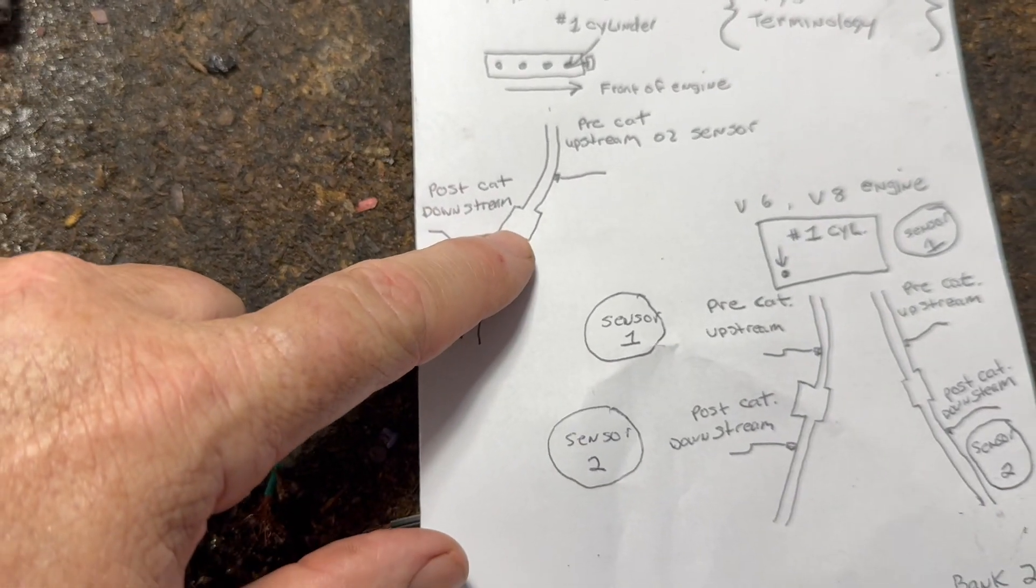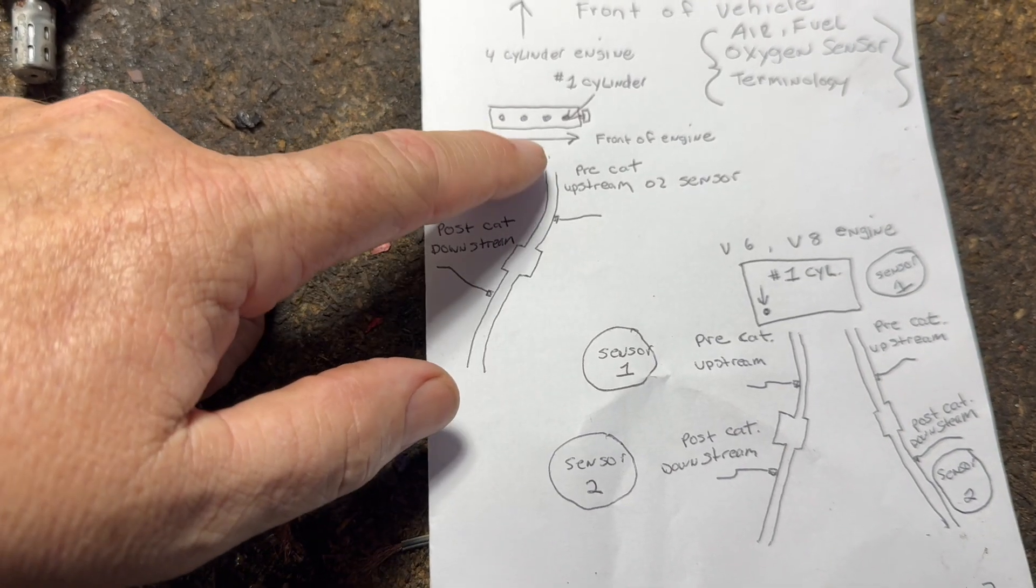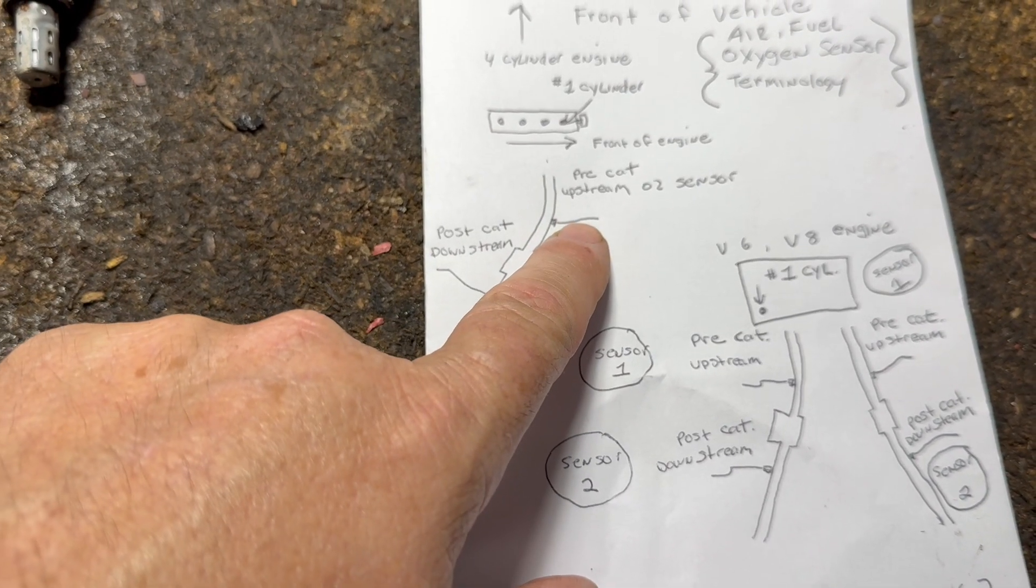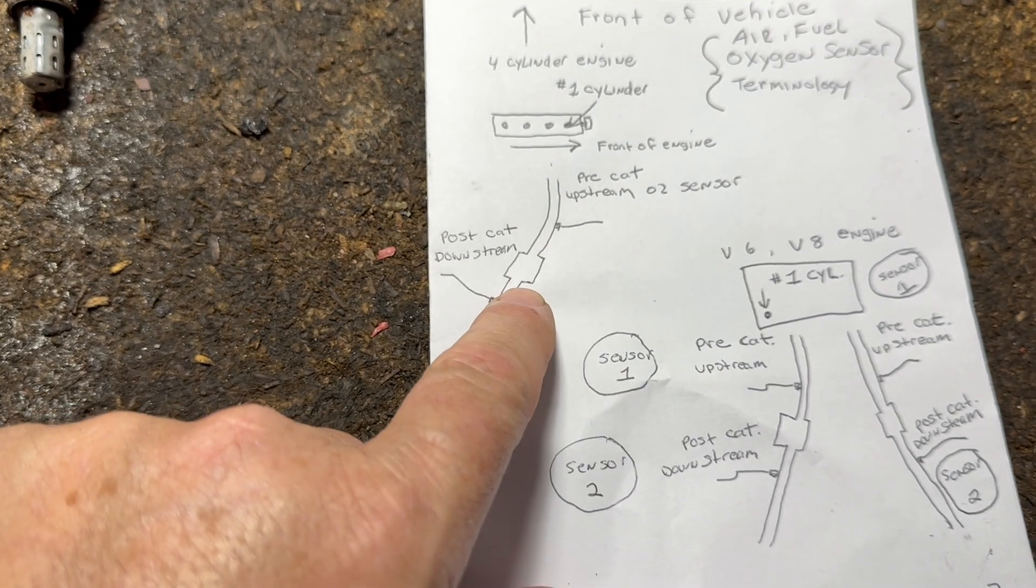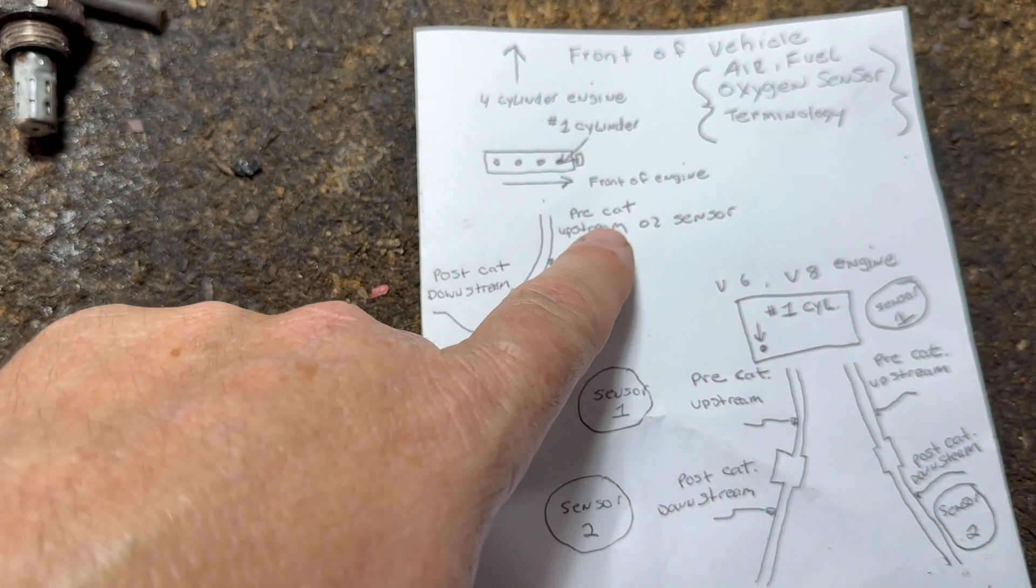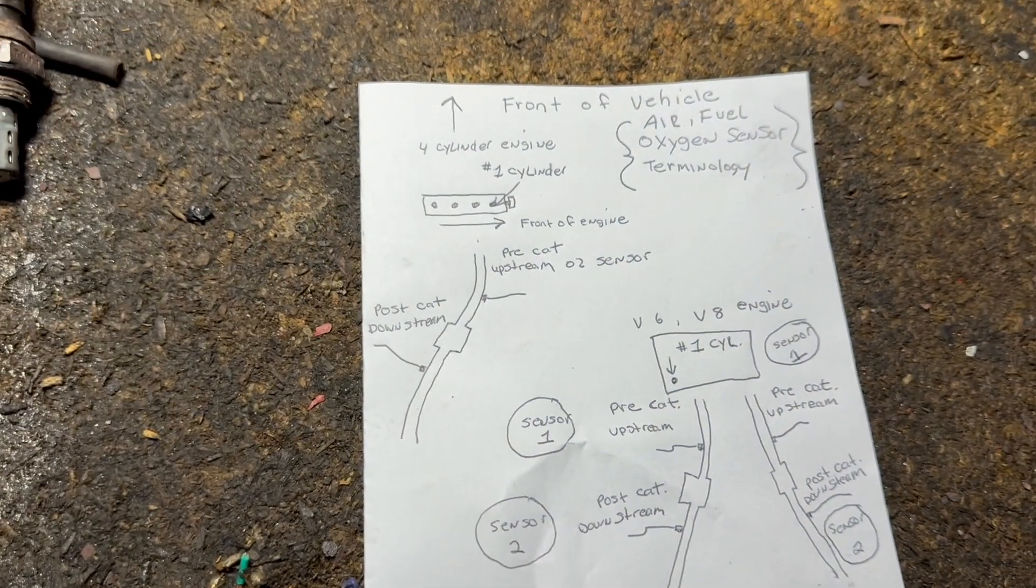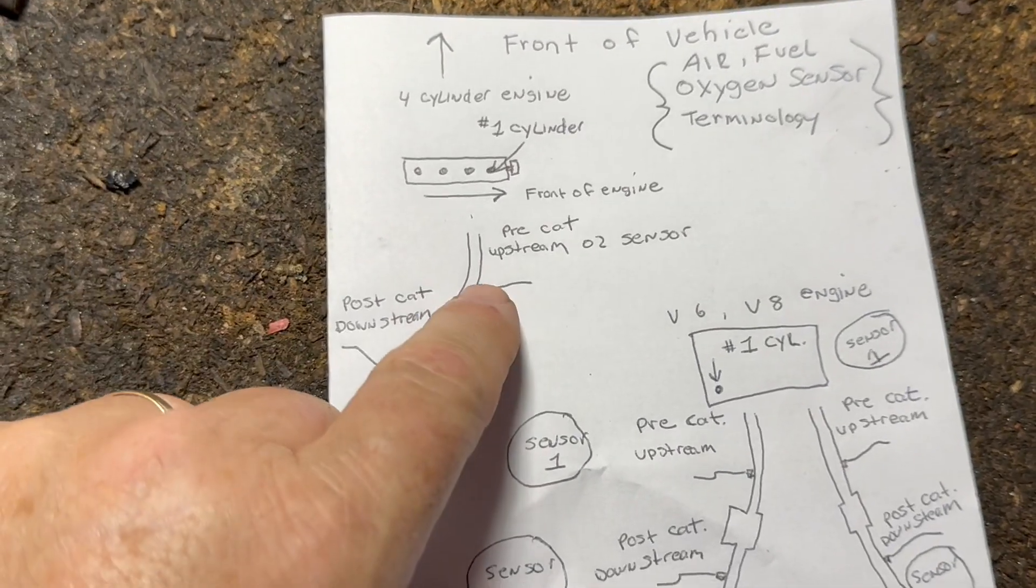Well, here's the catalytic converter. Okay, here's the pipe coming from the exhaust manifold and there's going to be a sensor somewhere on the top before the catalytic converter. Okay, that's called a pre-cat, upstream O2 sensor. So, whatever you want to call it.